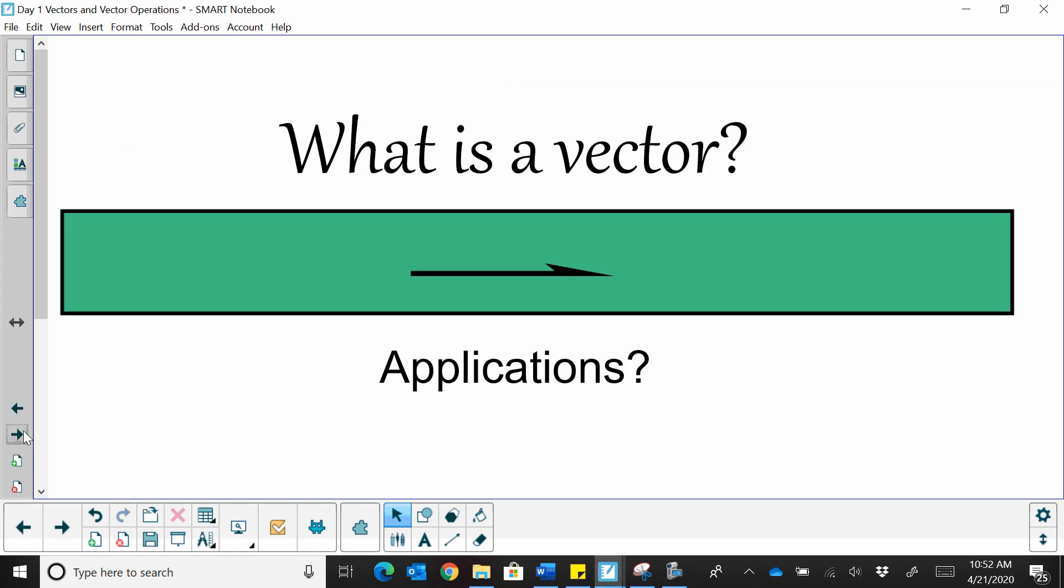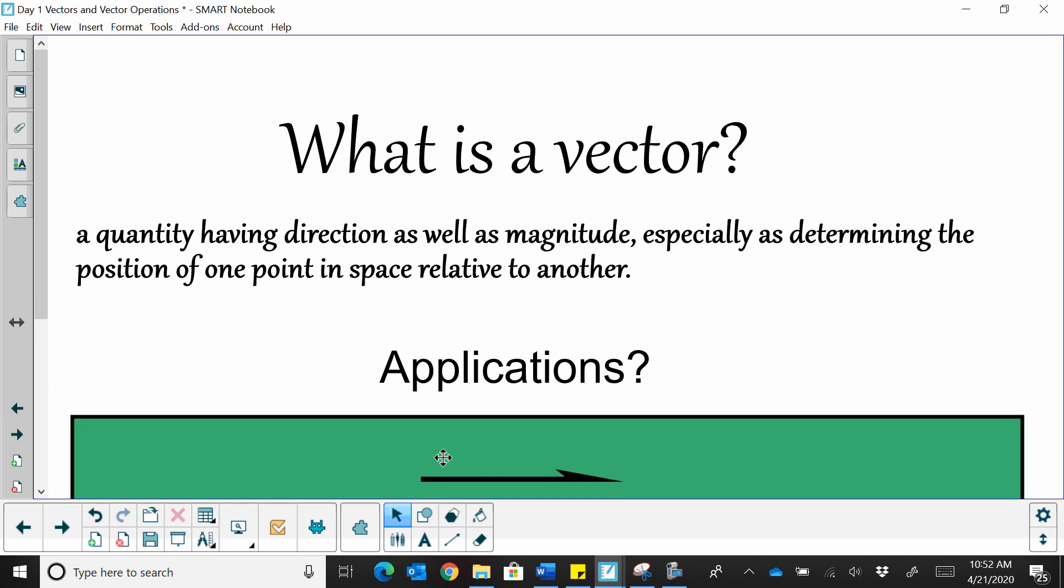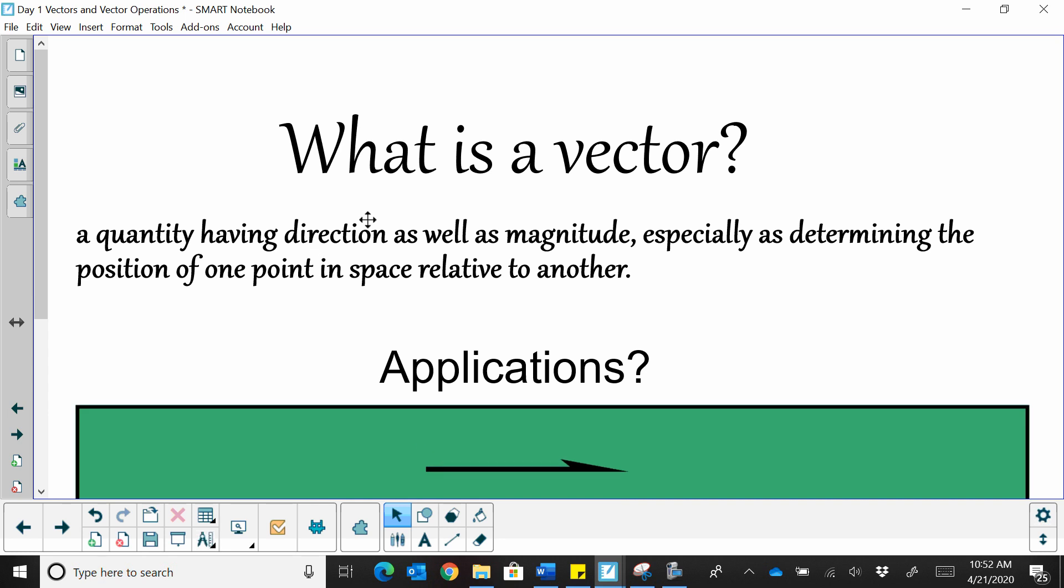So what is a vector? A vector is a quantity having a direction as well as a magnitude. And a magnitude just is a length, especially as determined in the position of one point in space relative to another. So what are some applications of vectors?